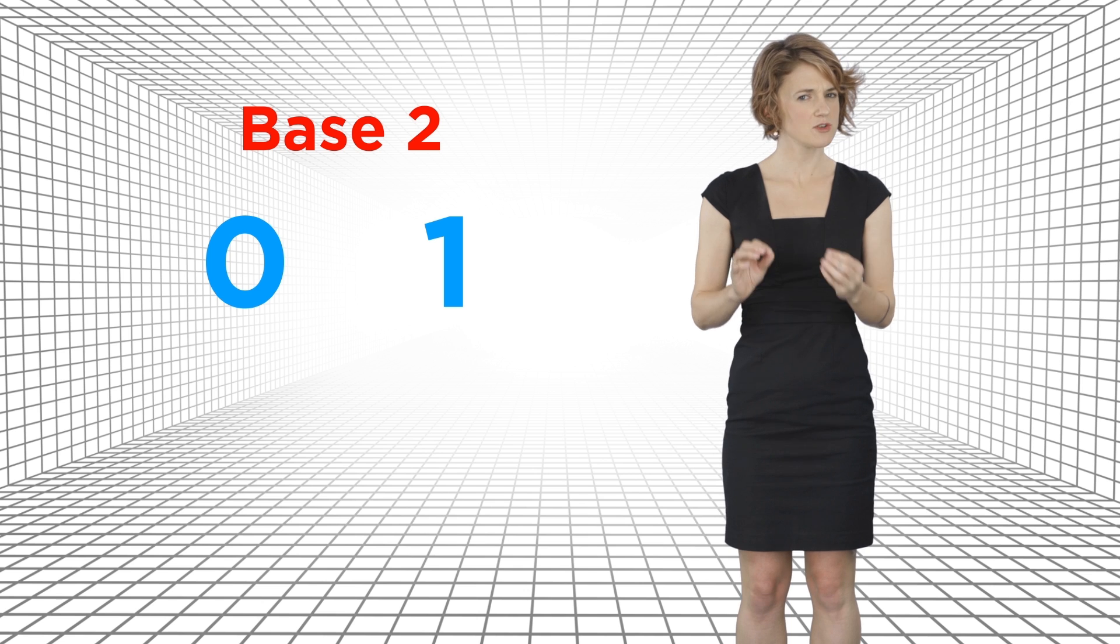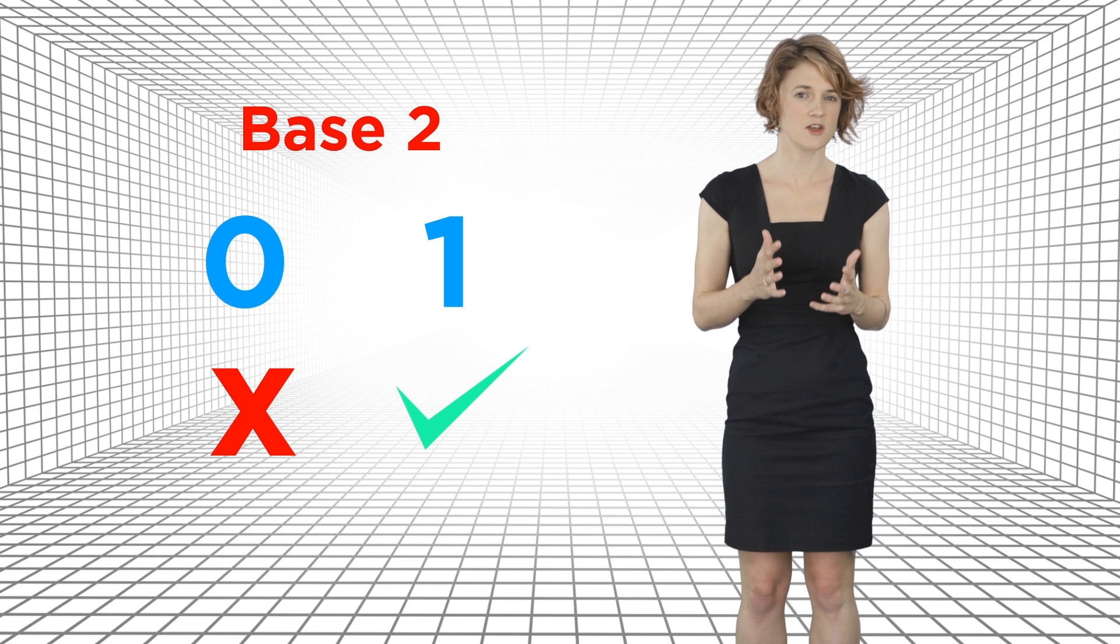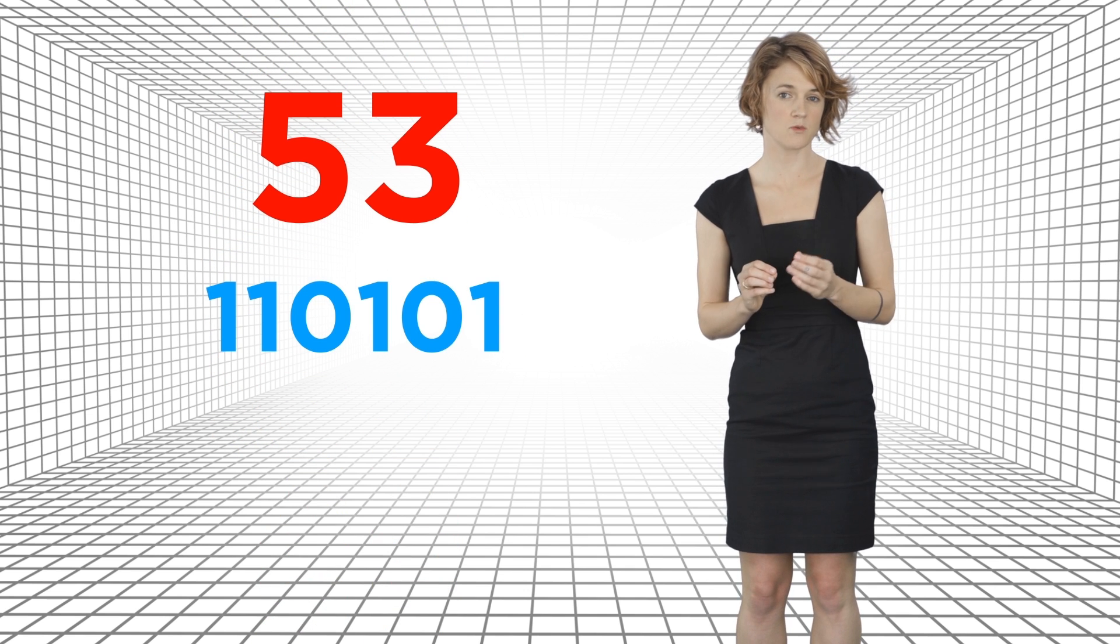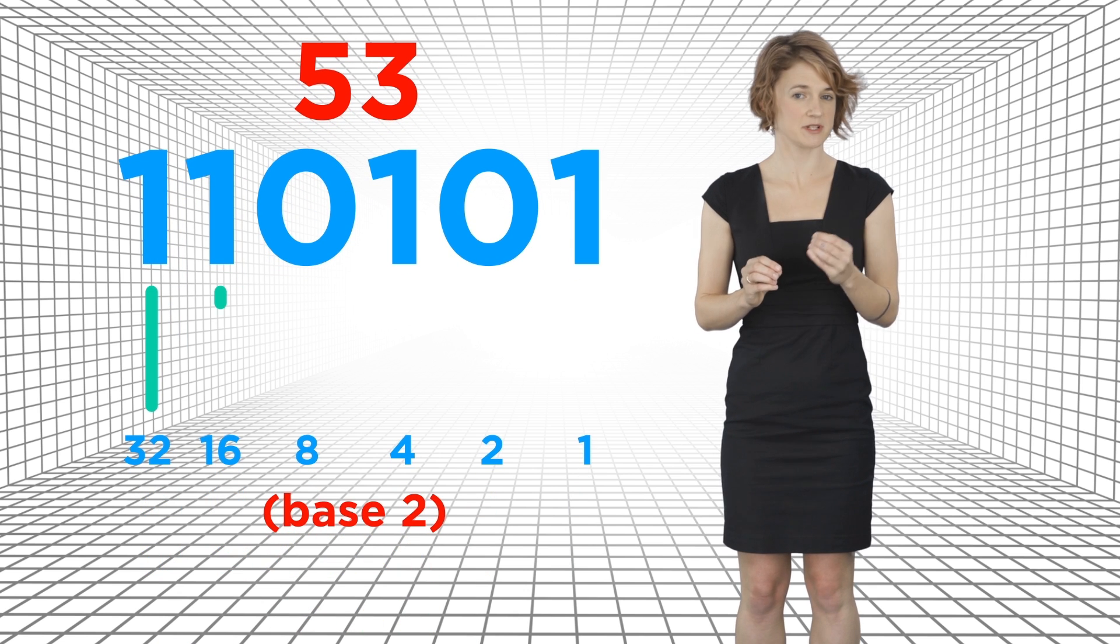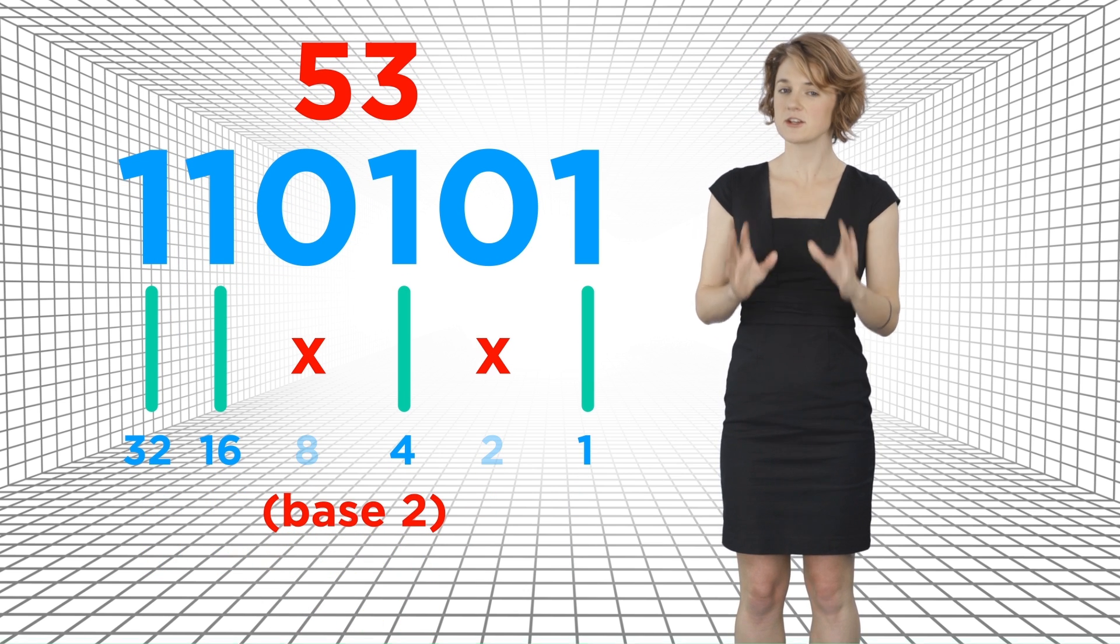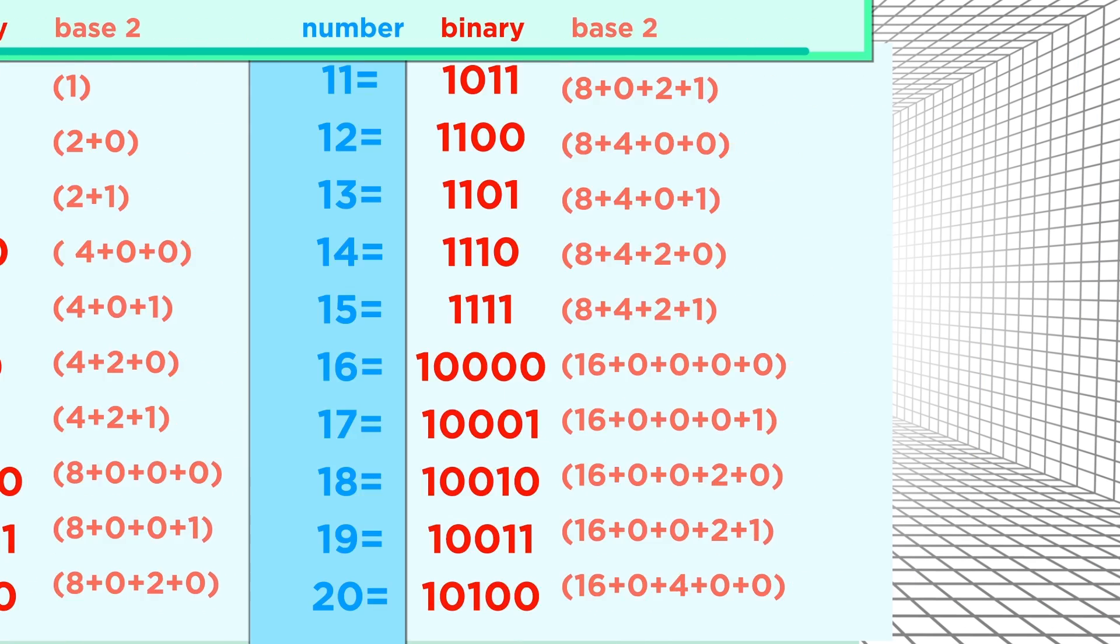You can think of it as one indicating the presence of that digit, and the zero indicating its absence. So the number fifty-three is one one zero one zero one, because thirty-two plus sixteen plus four plus one is fifty-three. Here's how you represent the numbers one through twenty in binary. Cool, right?